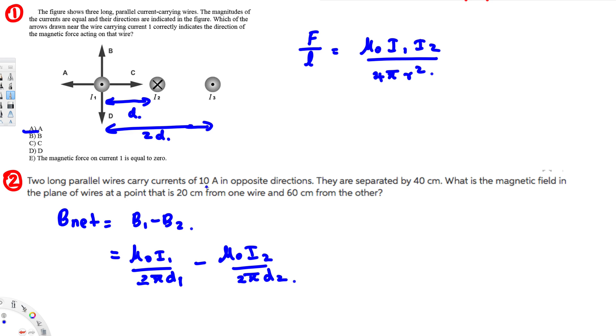So two long parallel carry currents 10 ampere, so two of them have same current, so we can factor this one out. So we are going to have μ₀, so instead of i₁ i₂ we can write just i, because they have both equal current. We can just write i. And then in the denominator we are going to have 2π, and we are going to have 1 over d₁ minus 1 over d₂.